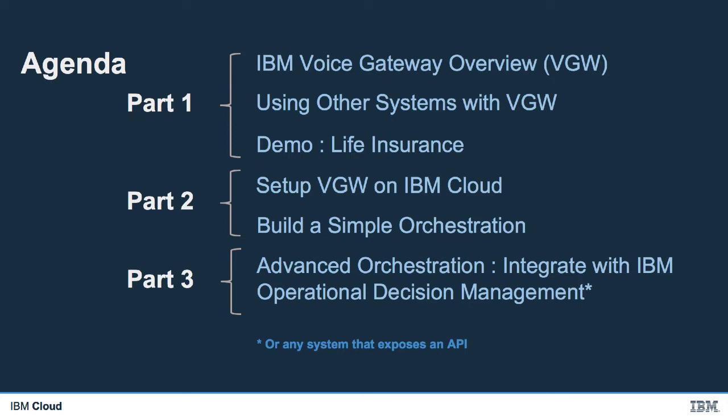It would take too long to do this in regular program code and it would cost a fortune. With ODM, a business user such as an actuary could make the changes, run a full regression test, and hand them over to deployment with no interruption to service. Here we're using ODM as the external service, but Voice Gateway can integrate with almost anything that has an API. I'll have another example that uses a basic web service, so we're not dependent on ODM.